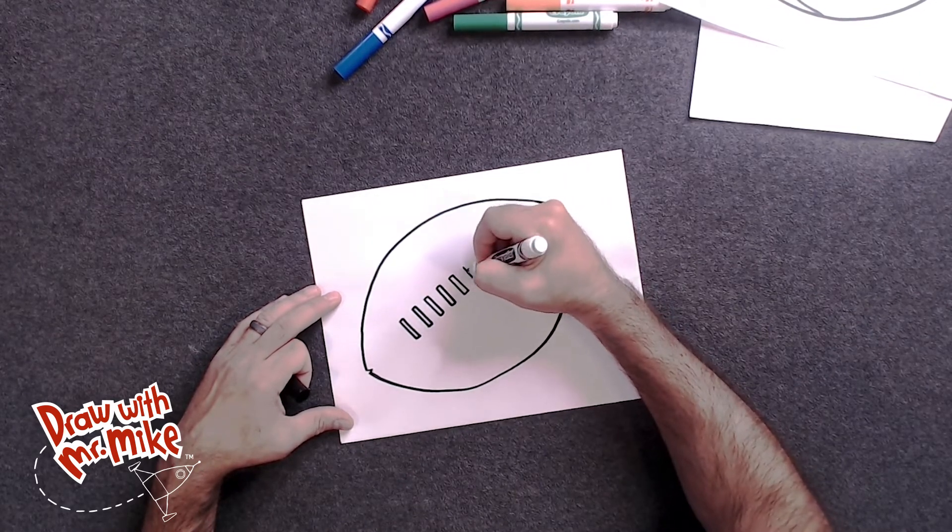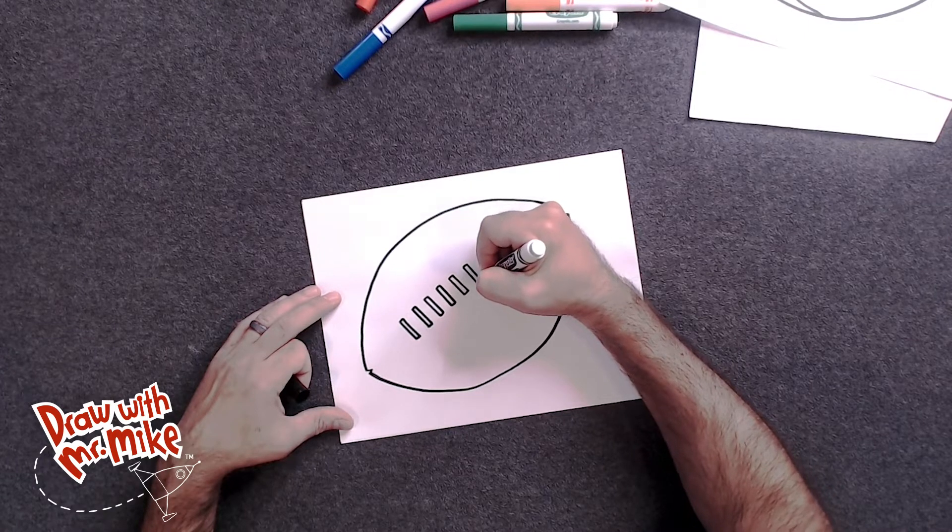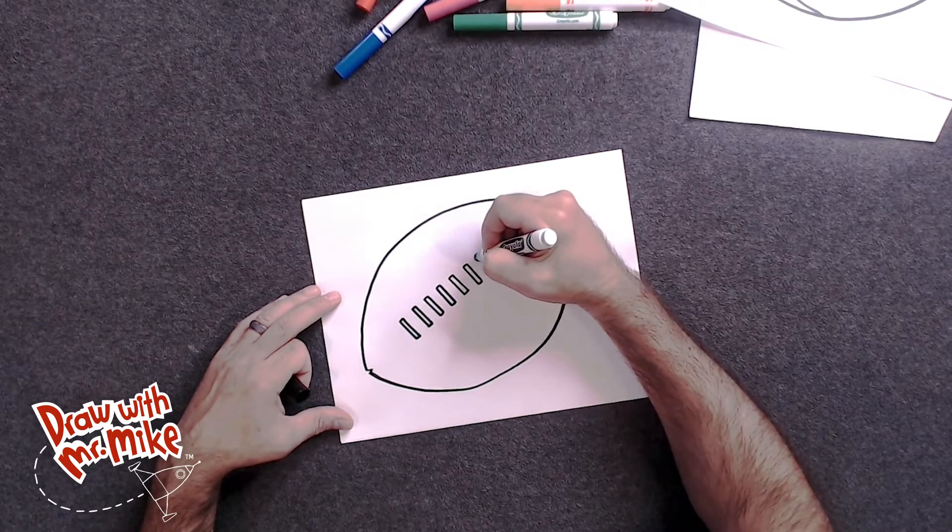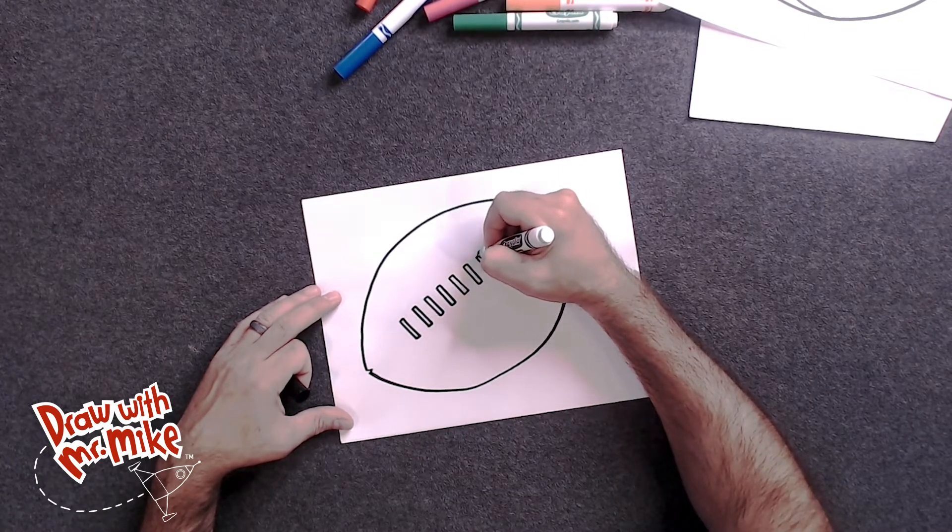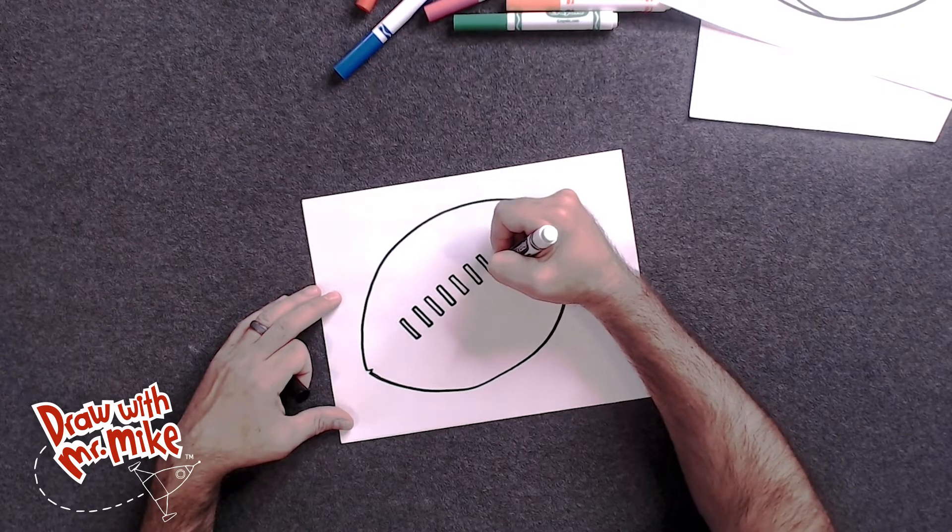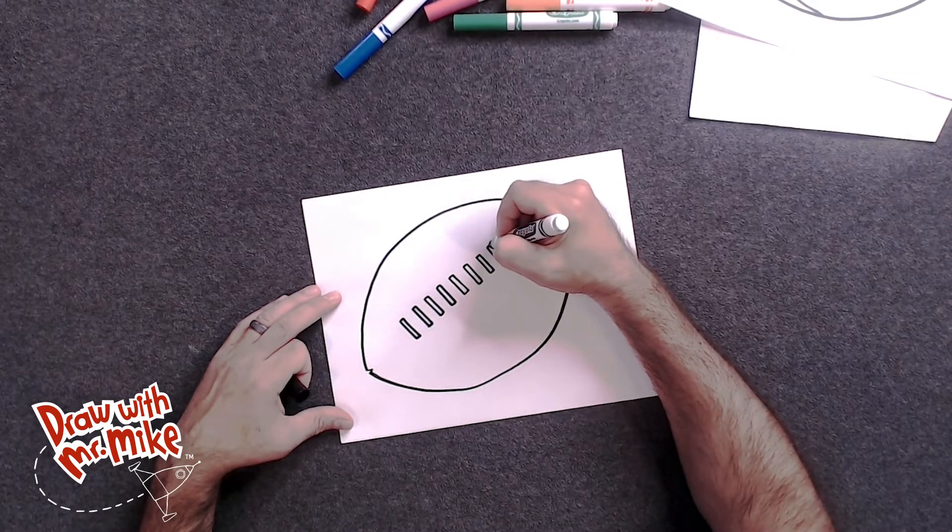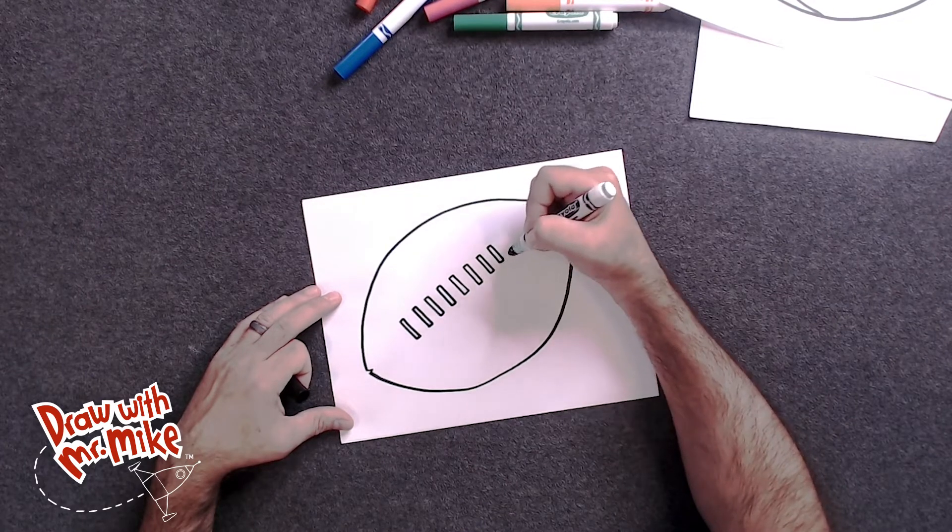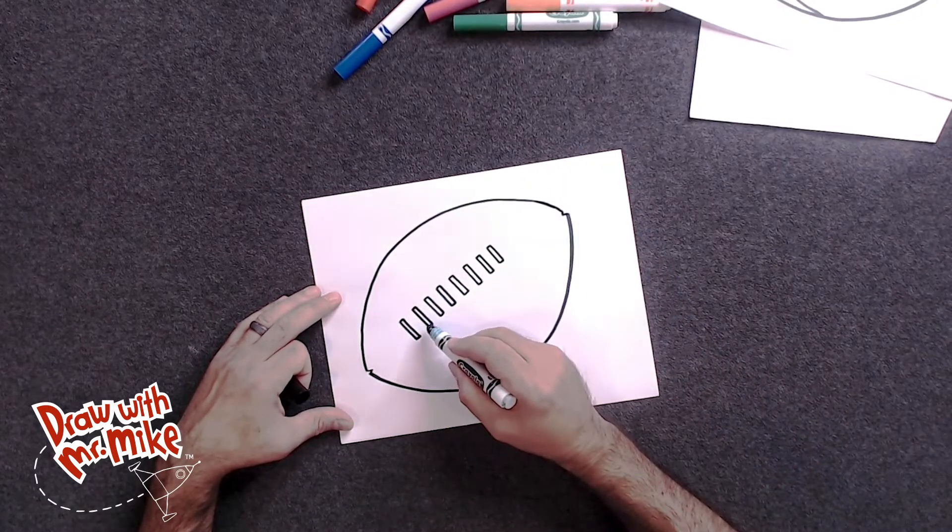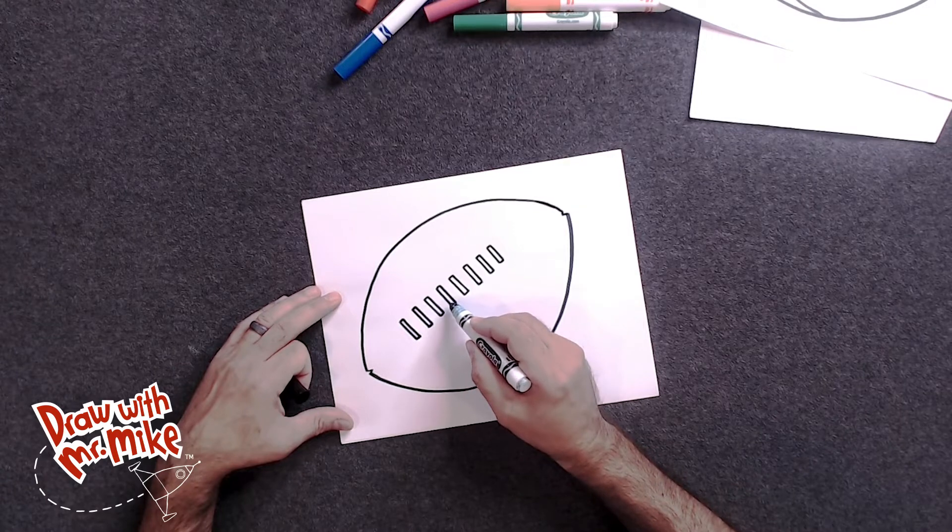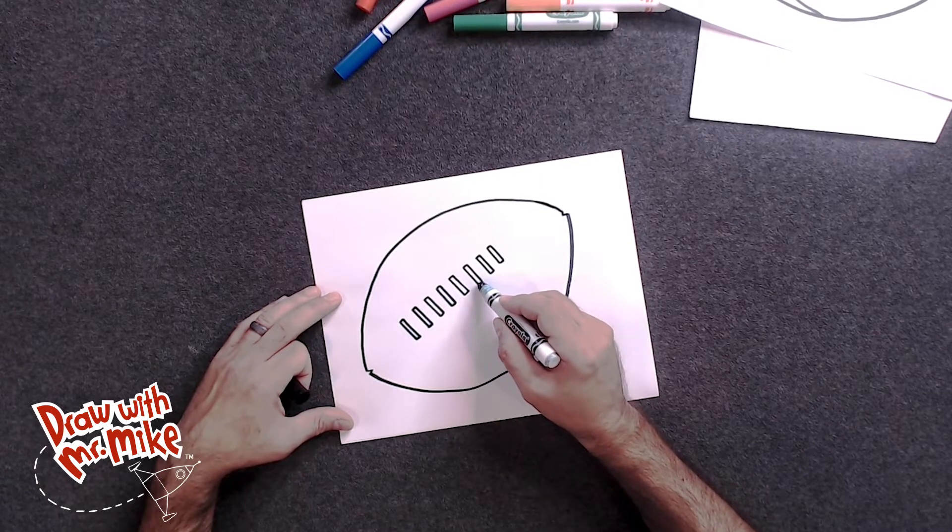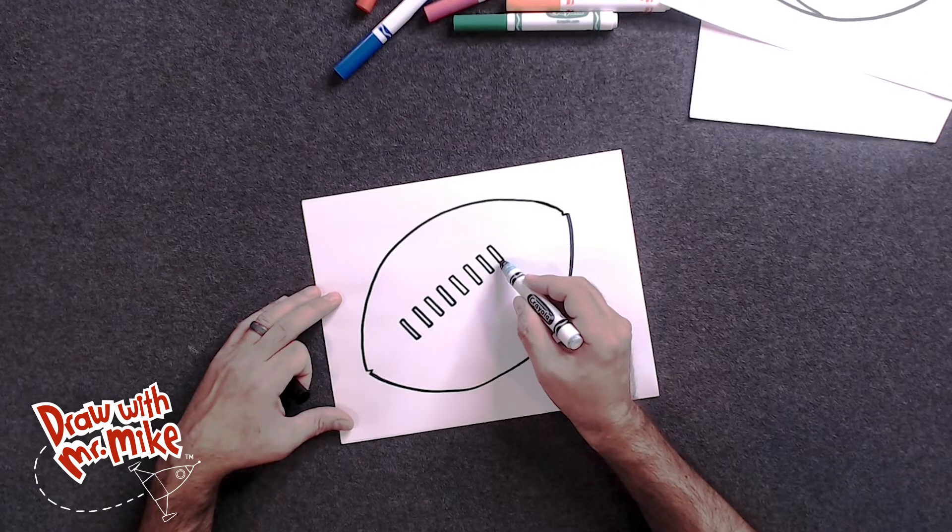And we'll do one, two, three more. And now we have eight. So let's count it all together. One, two, three, four, five, six, seven, eight.